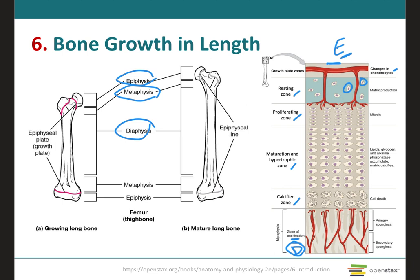The next zone is the zone of proliferating cartilage. The chondrocytes in this zone are slightly larger and arranged like stacks of coins. These chondrocytes undergo interstitial growth as they divide and also secrete the extracellular matrix. This means they divide to replace those that die at the side of the epiphyseal plate facing the diaphysis.